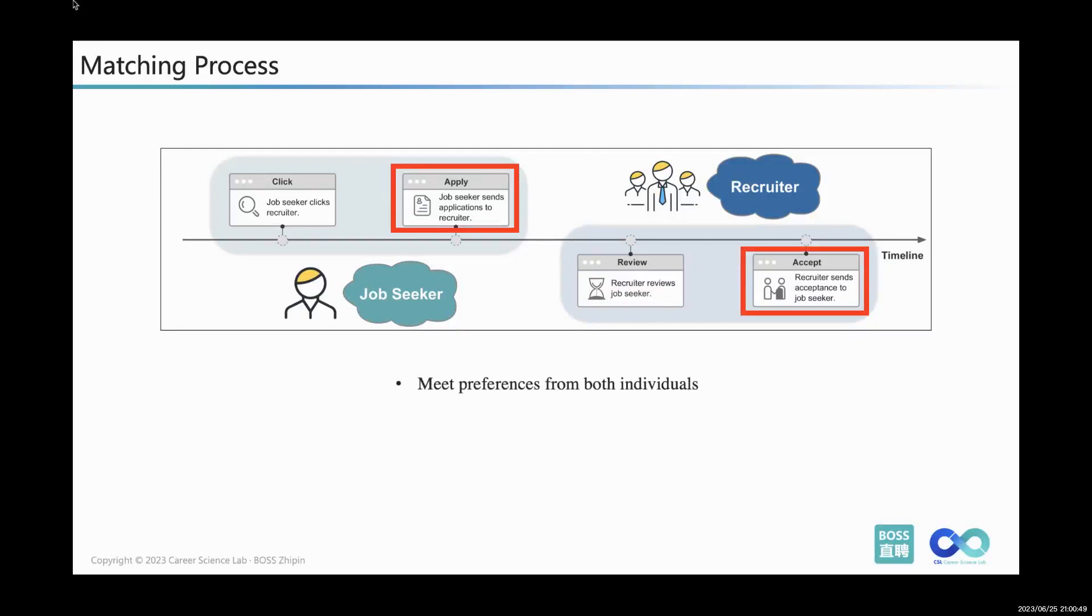A perfect match here means that both the job seeker and the recruiter find each other suitable. The matching process typically unfolds over multiple stages, with each individual making decisions based on their unique preferences. The crux here is the recognition that while the preferences of the job seeker and the recruiter interact, they are fundamentally independent and can sometimes diverge significantly.